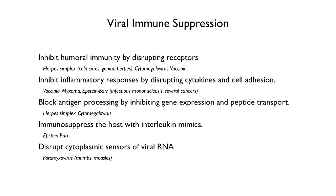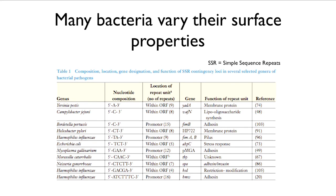Finally, paramyxovirus, which causes mumps and measles, can disrupt the cytoplasmic sensors of viral RNA, essentially making the cells blind to the fact that they're being infected by this virus.